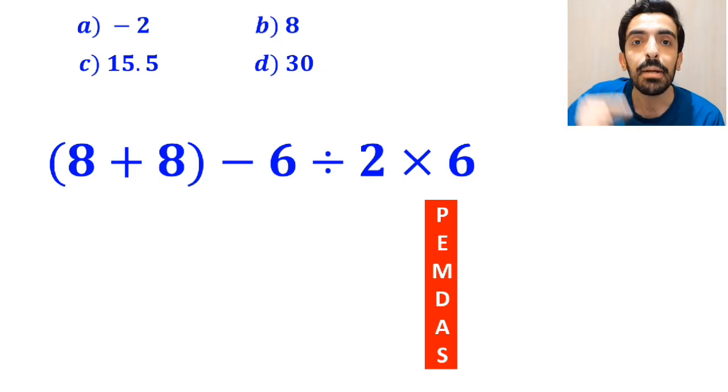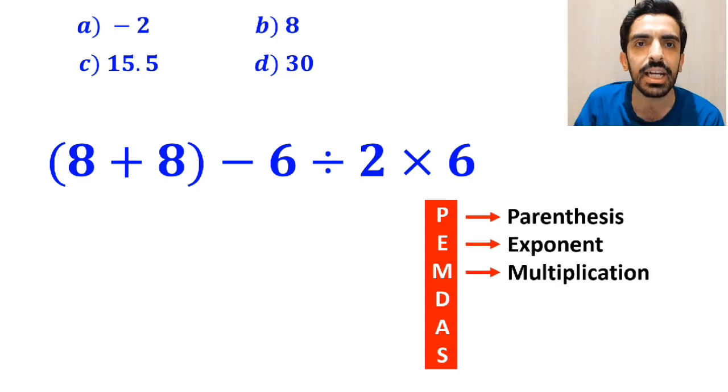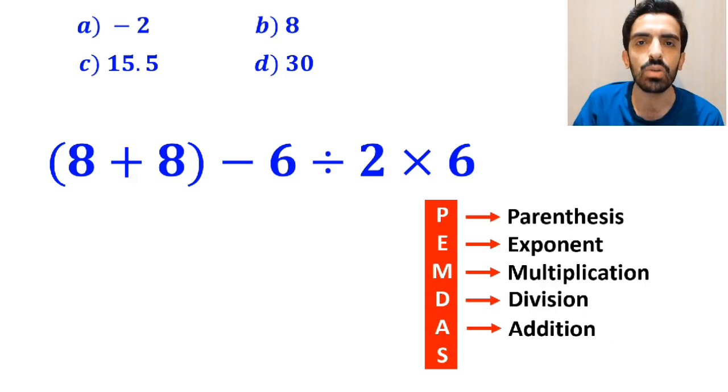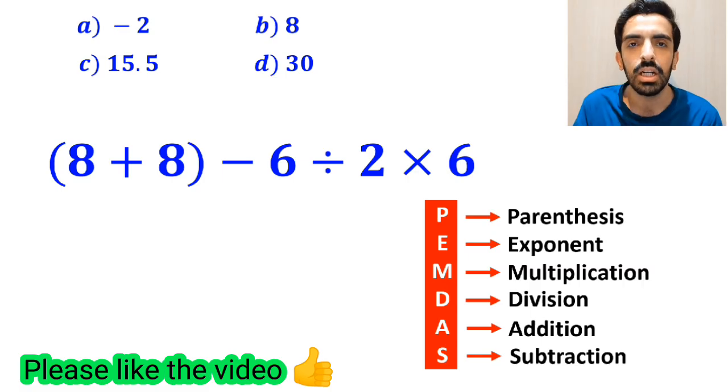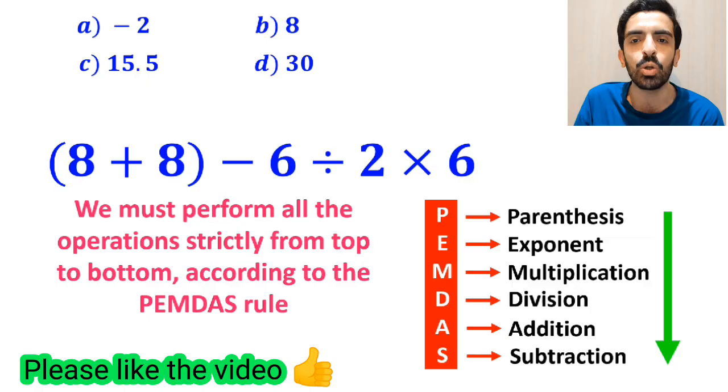In this rule, P stands for parenthesis, E stands for exponent, M stands for multiplication, D stands for division, A stands for addition, and S stands for subtraction. We must perform all the operations strictly from top to bottom, according to the PEMDAS rule.